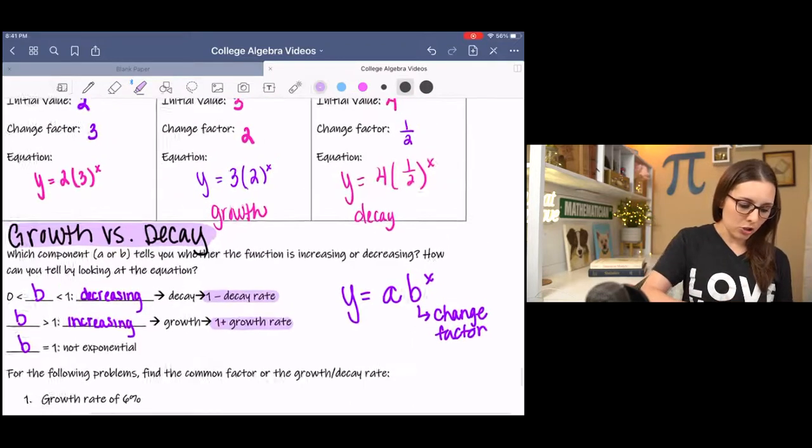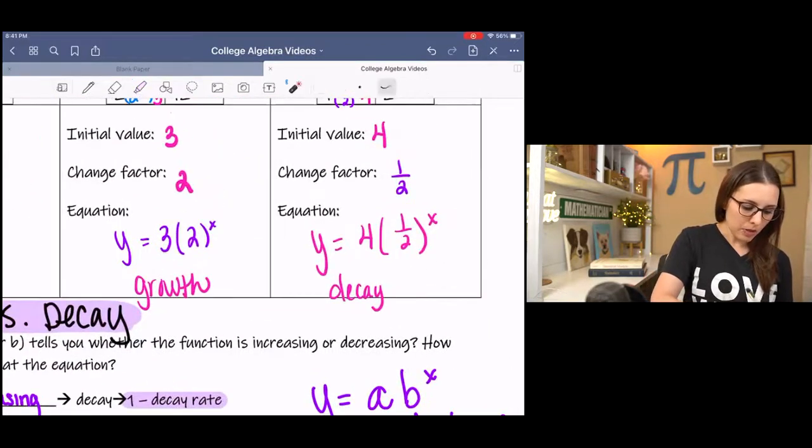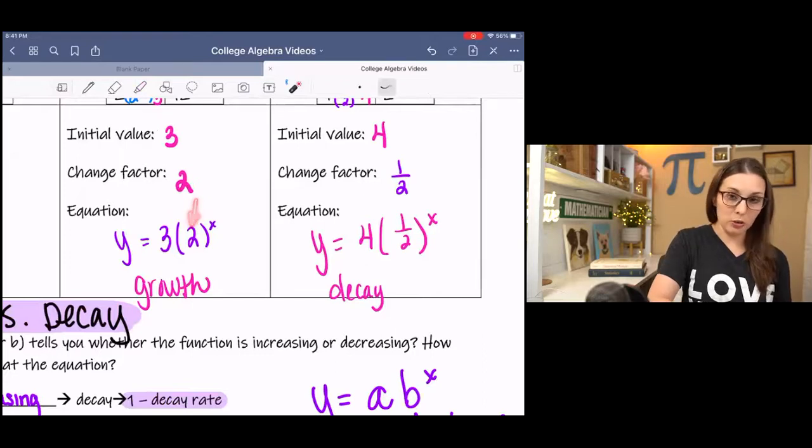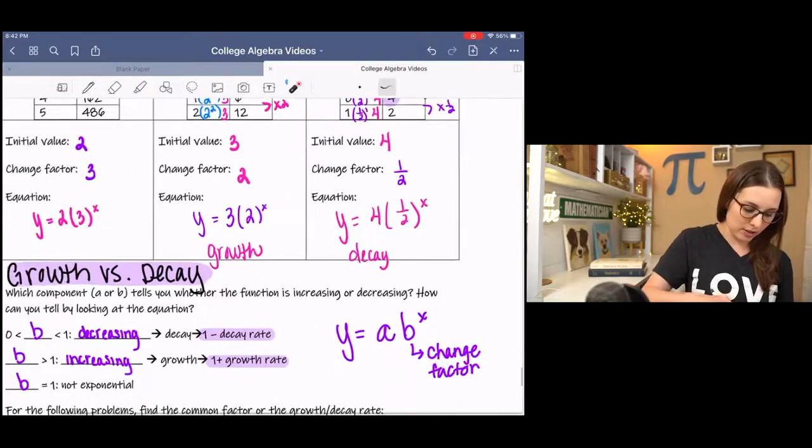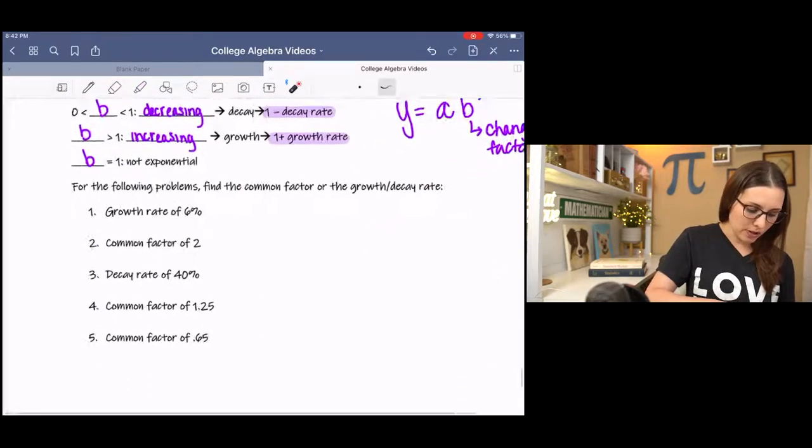So in my previous video, I touched on it a little bit here, where 2 indicated growth and 1 half, which is less than 1, indicated decay. So that's just an example of that. I have a few examples down here.